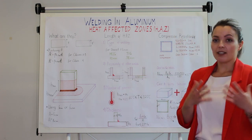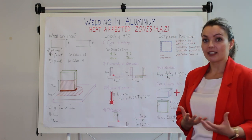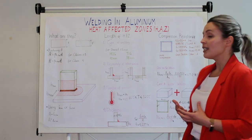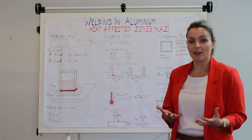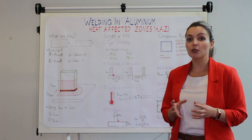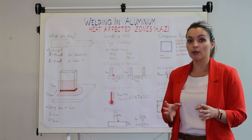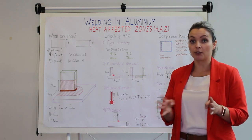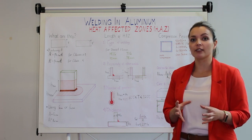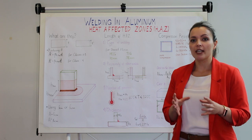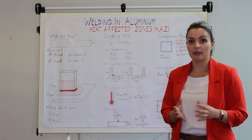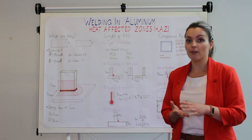Another factor affecting the width of the heat affected zone is the proximity of other welds. When we've got two welds close to each other, the width of the heat affected zone is the width of the group weld because it may overlap.